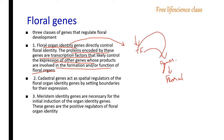Next, about the cadastral genes. They act as spatial regulators of floral organ identity genes by setting boundaries for their expression. That means if only a certain portion of a gene needs to be expressed for the development of a floral organ, the cadastral genes control that — they set the boundaries for which area should be expressed for developing the floral organs.